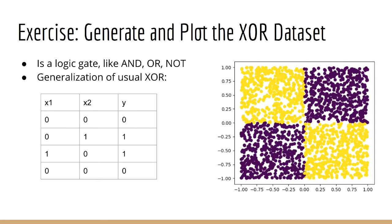And the upper right and bottom left corner will have another color. Your job is to generate this data and make a scatterplot like what you see here.